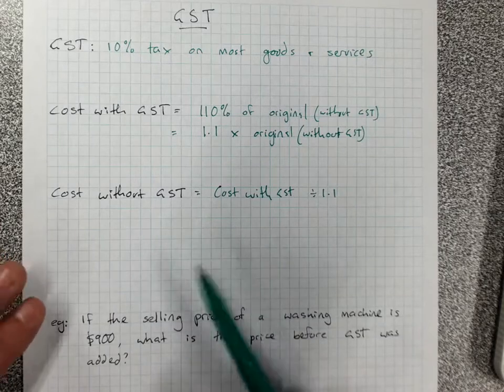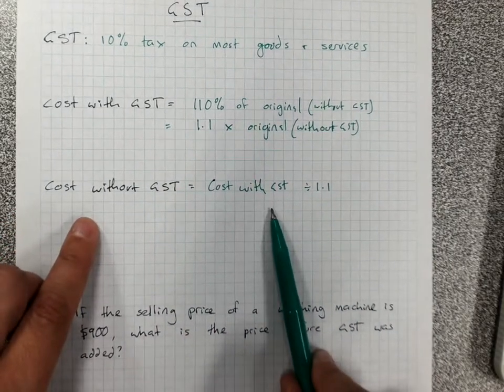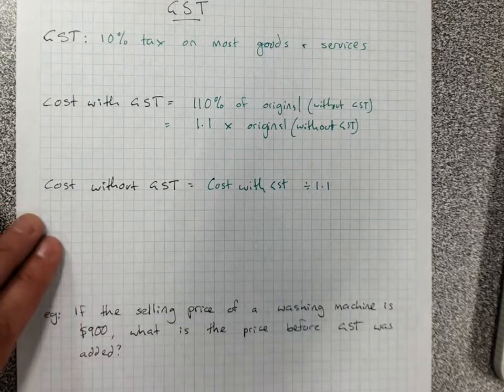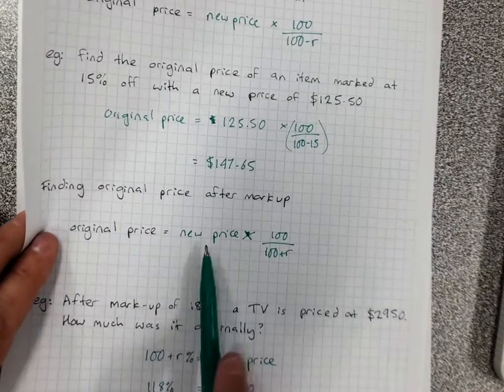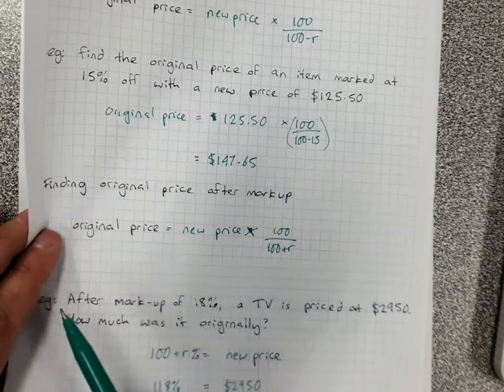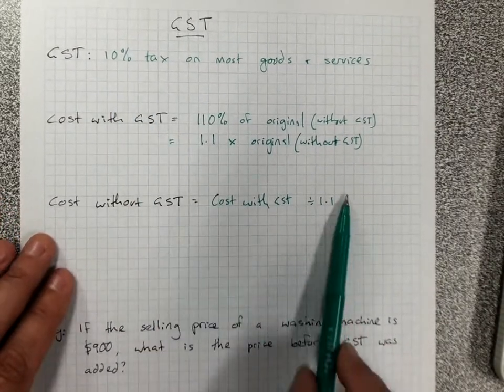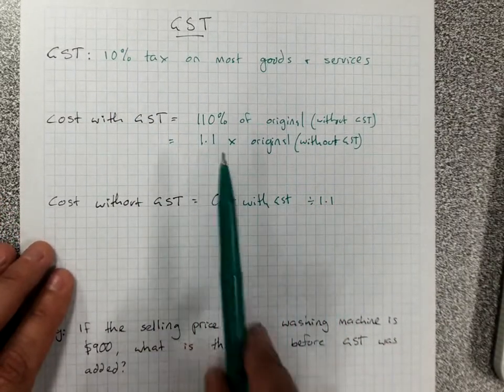Really it's like finding the original price after a 10% increase. So if you wanted, you could go back to new price times 100 over 100 plus R. But since it's always going to be 10% for GST, we might as well just learn that it's 1.1.